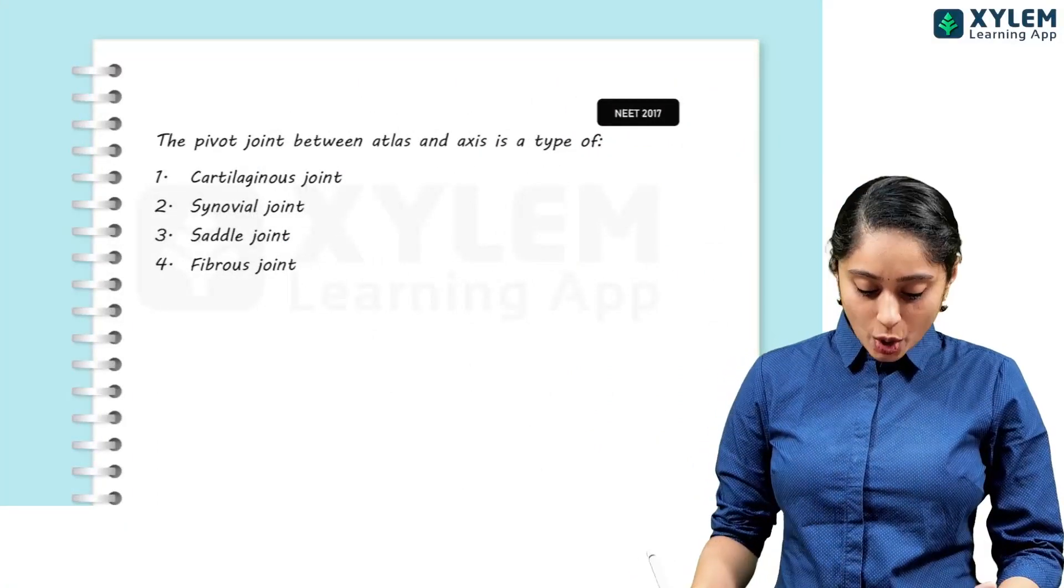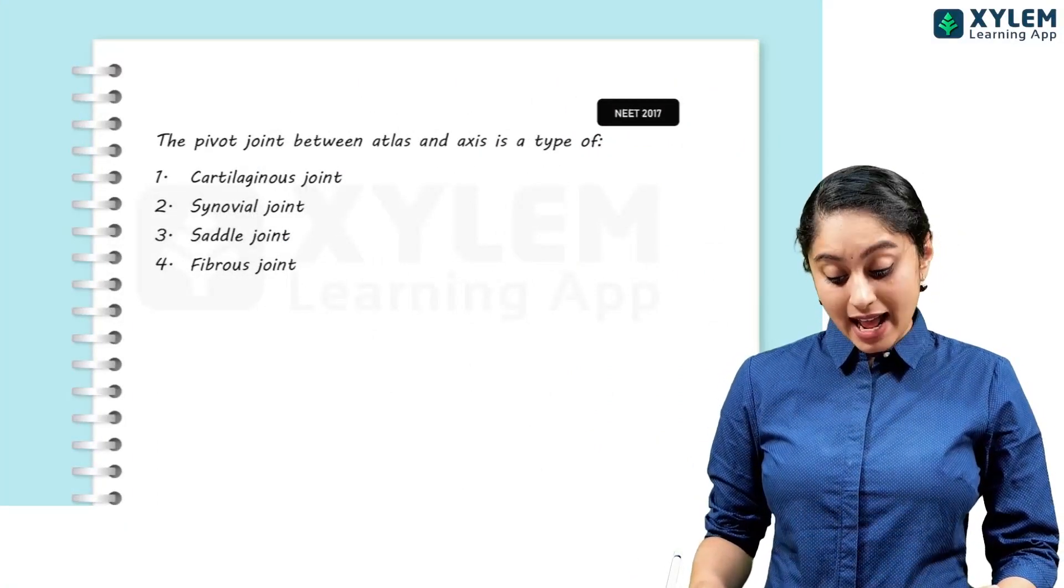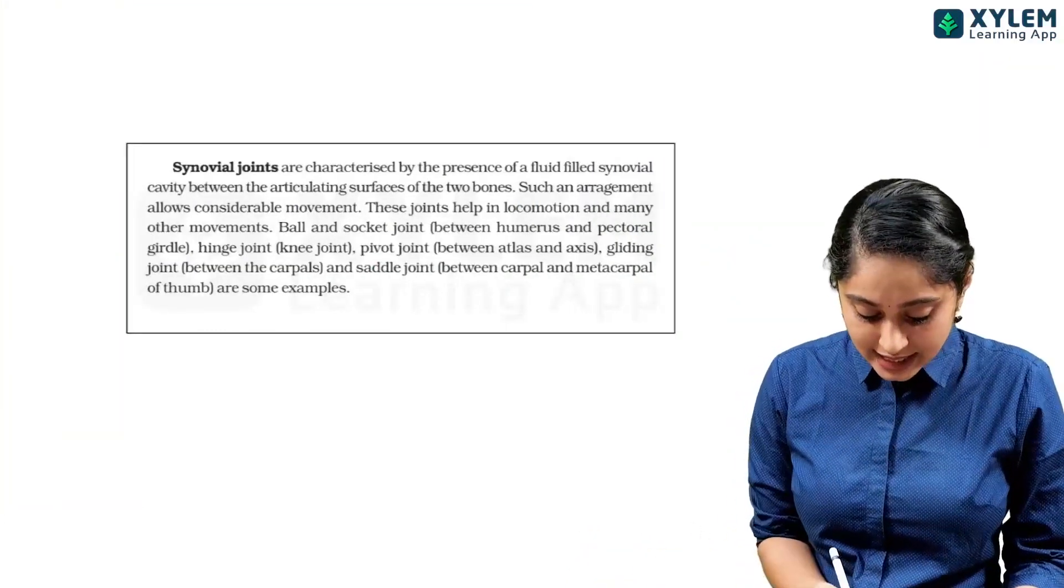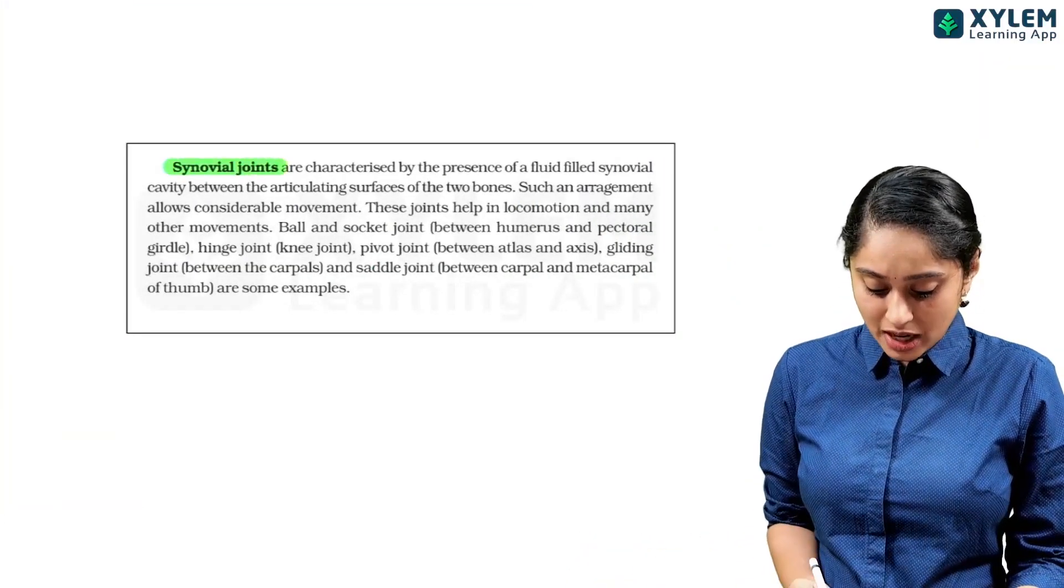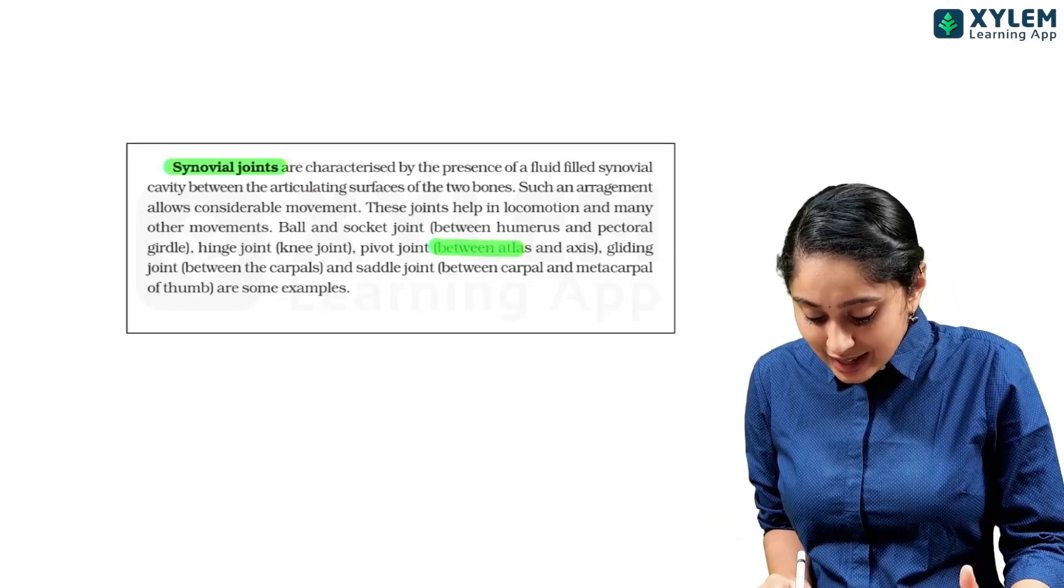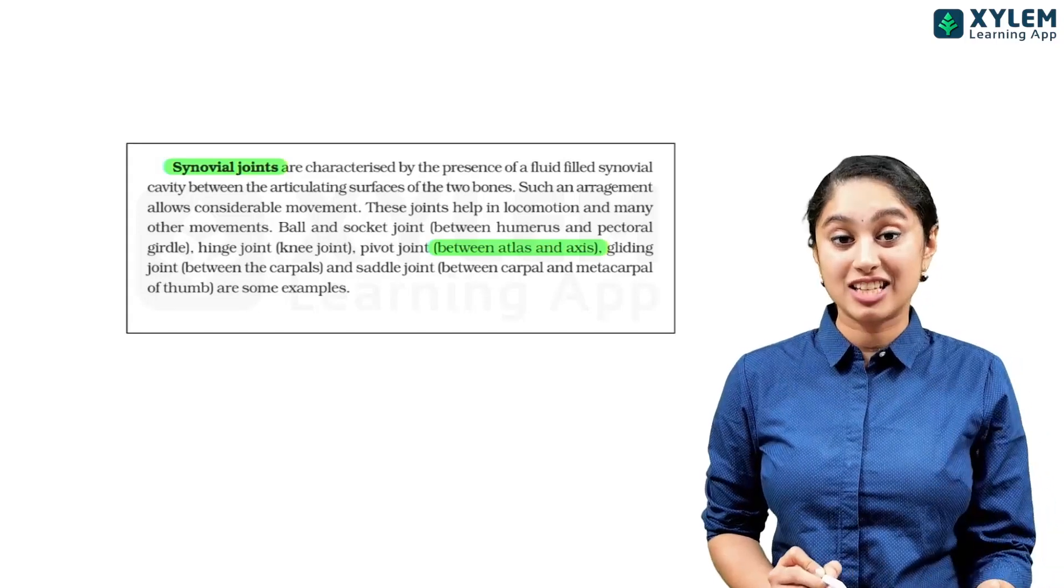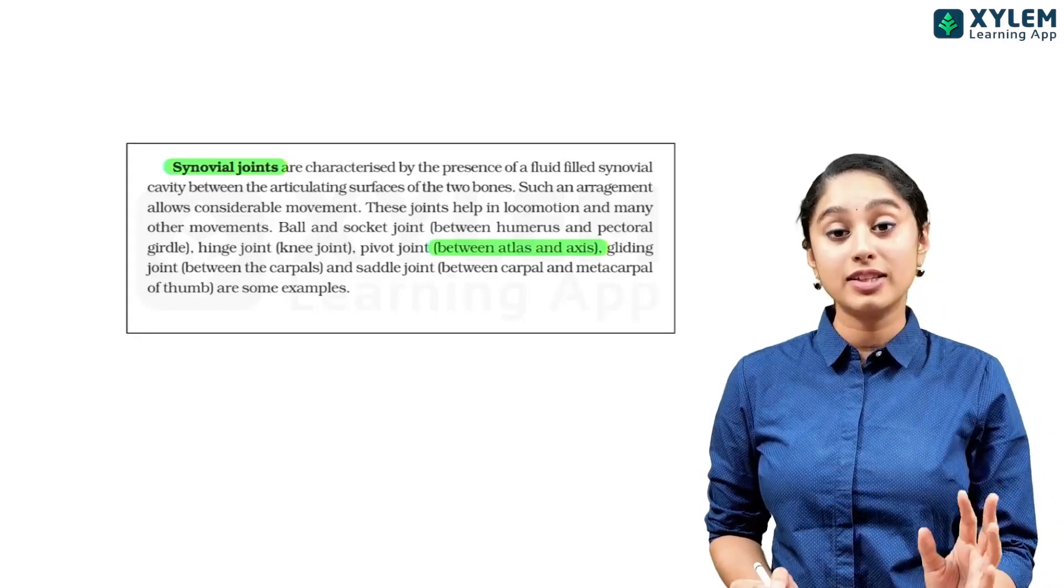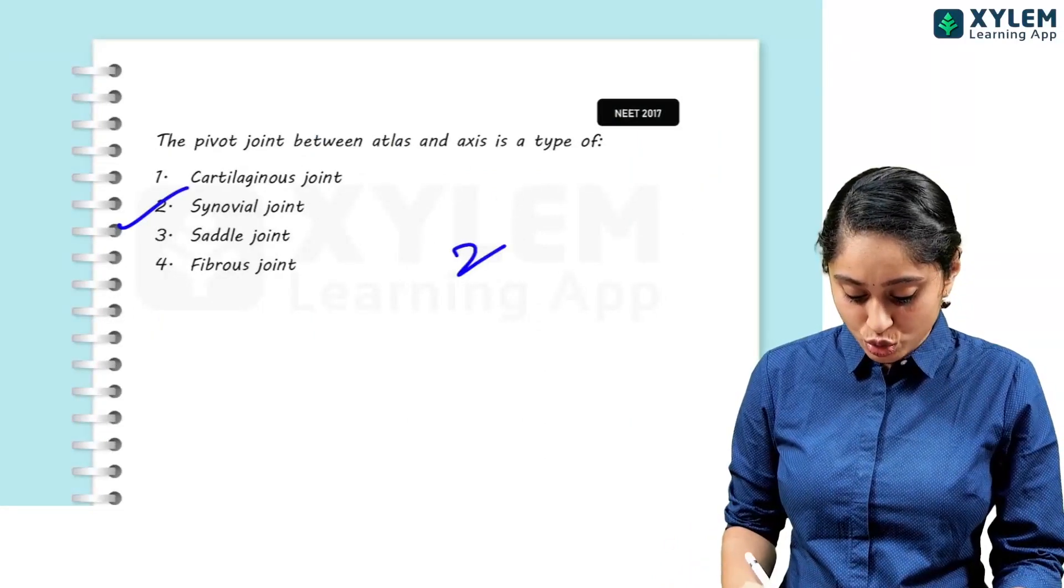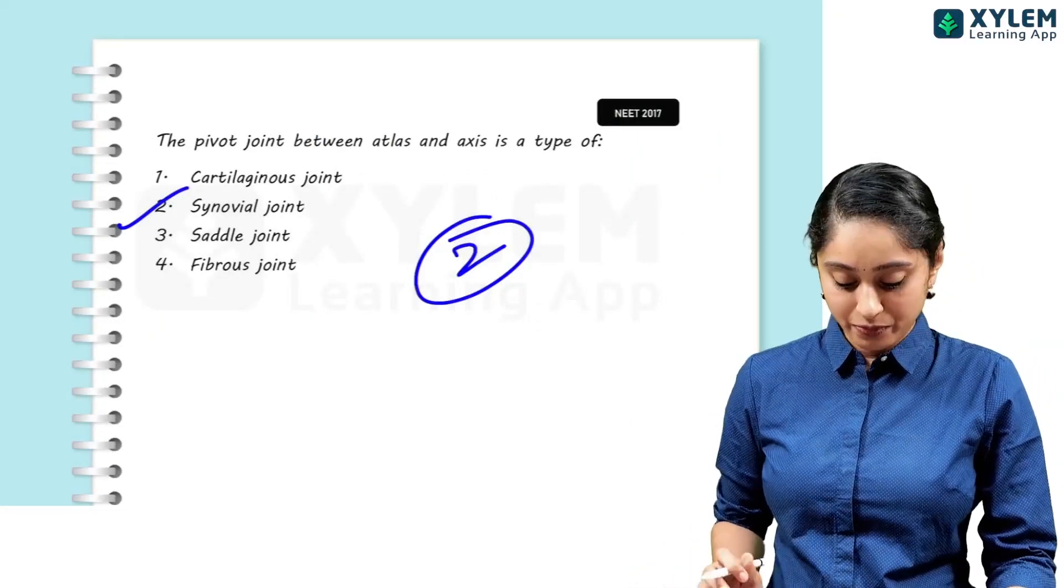The pivot joint between atlas and axis. Again, it is an example type of a question. In NCERT, synovial joints - ball and socket, pivot, hinge - it is an example type of a question. Between the lines, they have given atlas and axis. So in this example related, definitely you can expect questions. So that is why, here my answer will be 2 synovial joint.